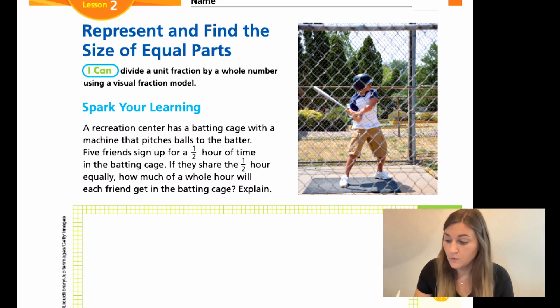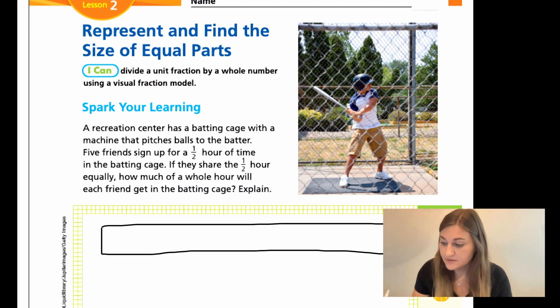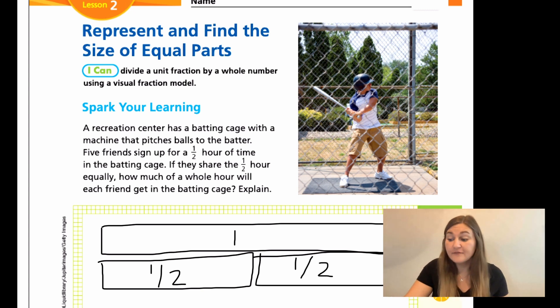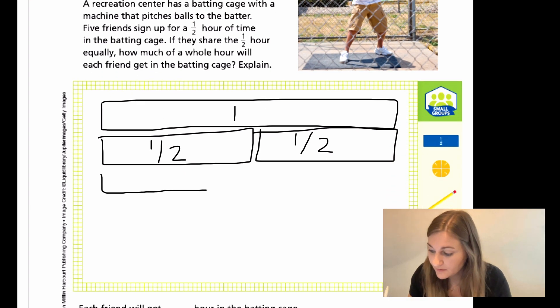We know we want to start out with one whole, right? Here is going to be our one hour. This is going to be showing as our one whole. But we know what we're really working with is our half an hour, our 30 minutes. So what I'm going to do is I'm going to show half bars underneath. So these are going to be my halves. And then it says that five friends are sharing this half an hour. So what I need to do is I need to take my half and I need to split it into five sections. So what I'm going to do is I'm going to draw another bar right below it and I'm going to split that bar into five.